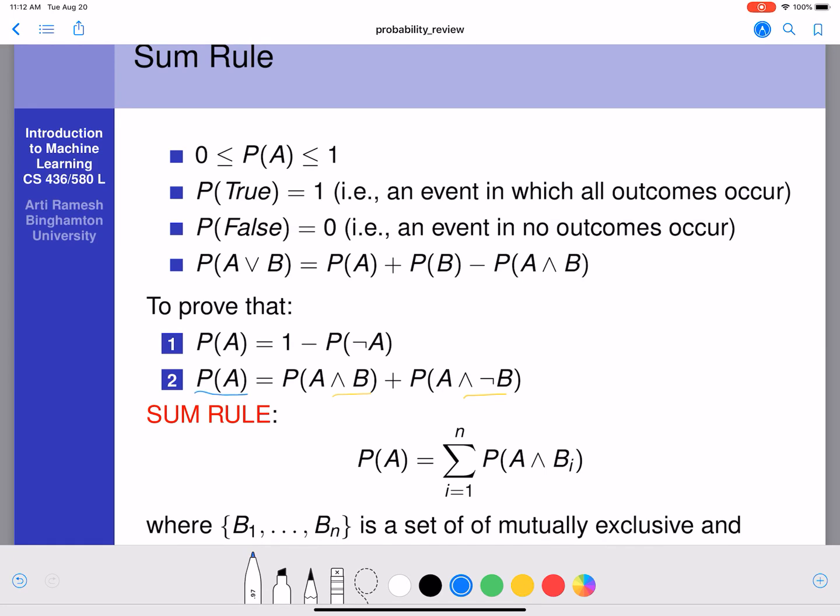And for that, we are using another event, B. So we are saying that B and not B are mutually exclusive, right? So just like A and not A. So any event and not of that event are mutually exclusive.